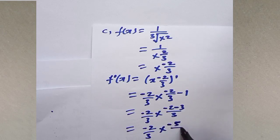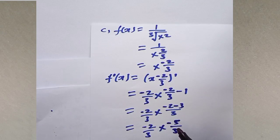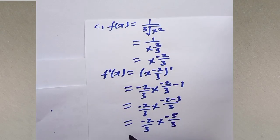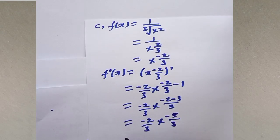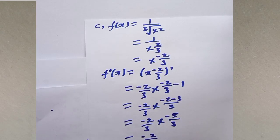This gives us negative 2 over 3 times x to the power of negative 5 over 3, which equals negative 2 over 3 times x to the power of 5 over 3.